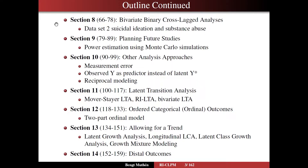Again, we're going to work with data set 2 — suicidal ideation and substance abuse — and look at the relationship between those two variables. In section 9, we turn to the area of planning for future studies, trying to figure out how large the sample has to be and how many time points you want to look at to get enough power to estimate the key features of the model.